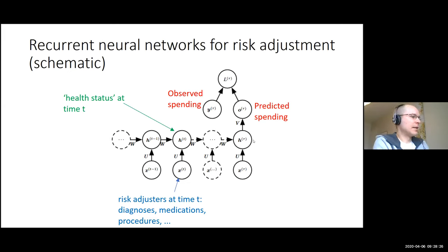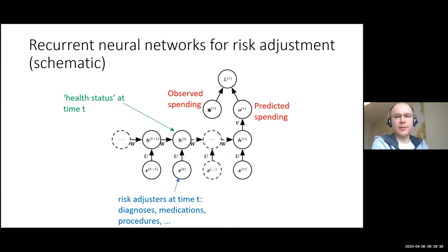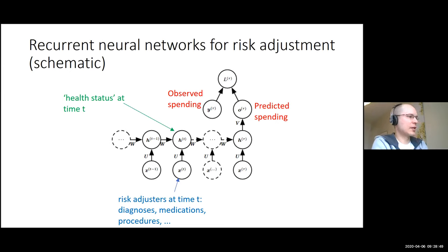The final hidden state is used to predict the spending for an individual, which is compared with observed spending to formulate a loss function. The model is trained to learn health statuses that are as predictive as possible about individual spending.